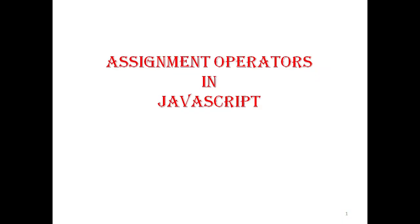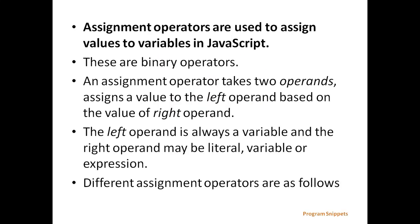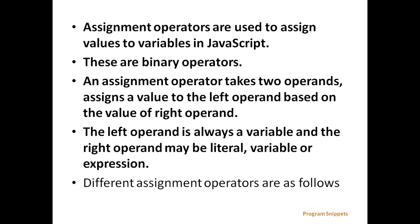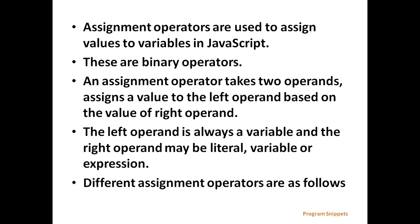Assignment operators in JavaScript are used to assign a value to variables. These are binary operators — an assignment operator takes two operands and assigns a value to the left operand based on the value of the right operand. The left operand is always a variable, and the right operand may be a literal, variable, or expression. Different assignment operators are as follows.